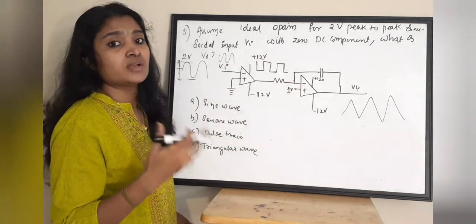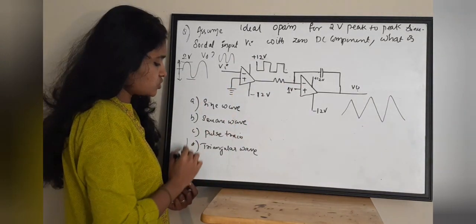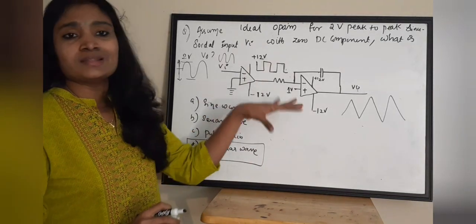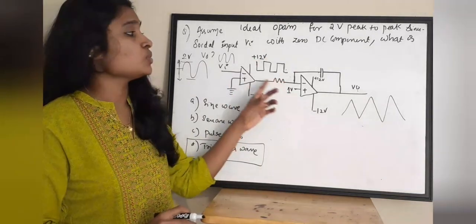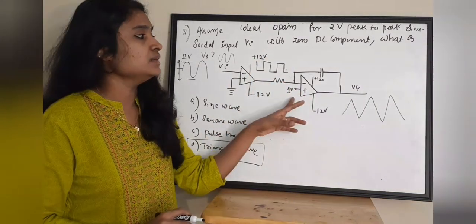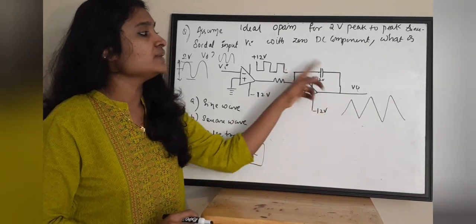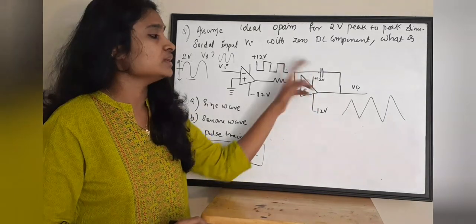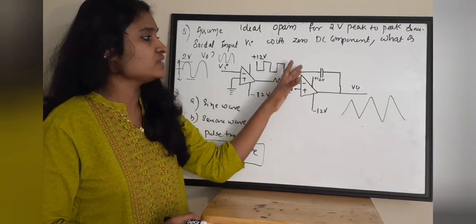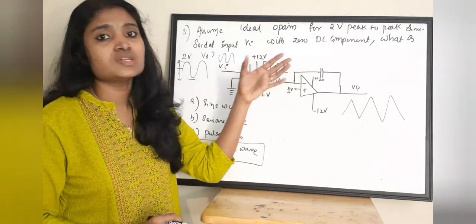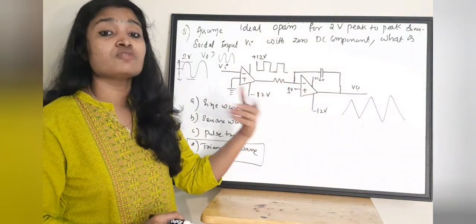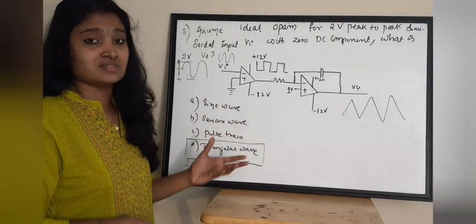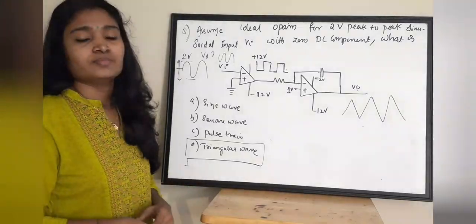The output of this circuit is a triangular wave, so the correct option is option D. To answer this, you need to understand the output of the first op-amp is a square wave, which is given to the second op-amp. The capacitor output connected to the output voltage terminal charges and discharges, forming a triangular wave. The correct answer is option D.